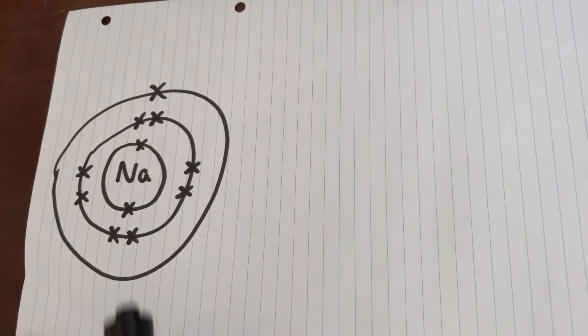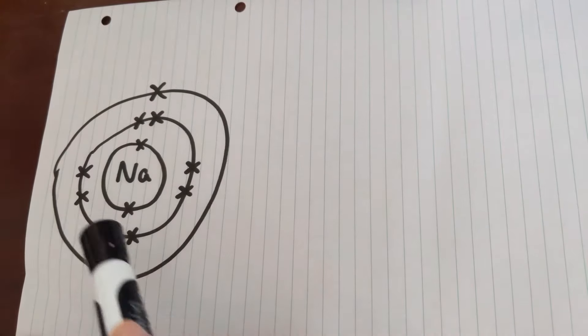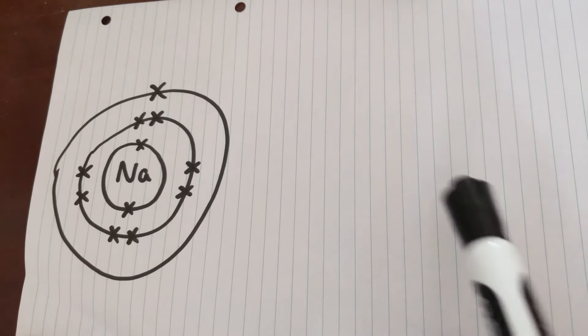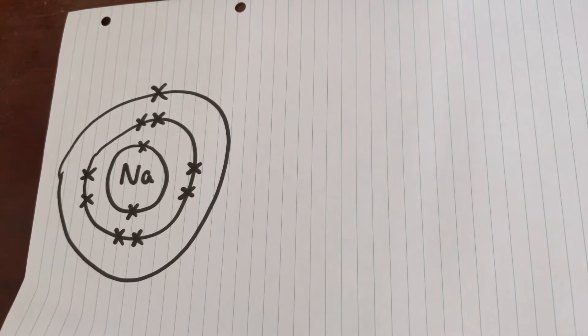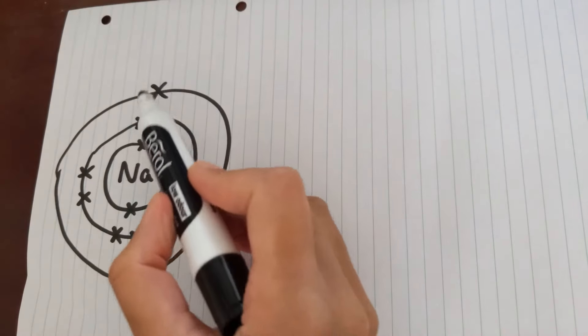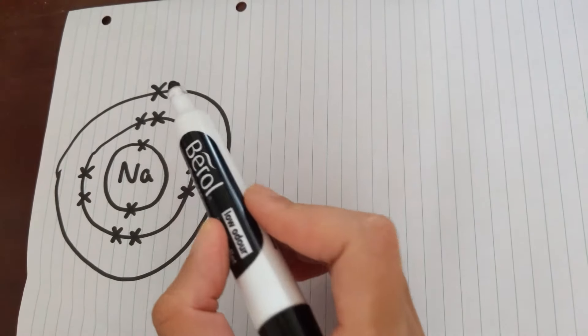So this video is all about how we're going to turn this atom of sodium into an ion of sodium. As I said in my previous video, this atom of sodium, we can tell that because it has one outer shell electron, it must be in group one.